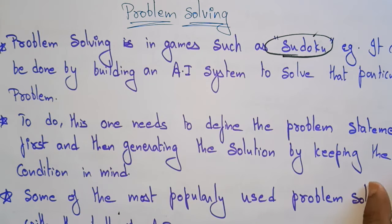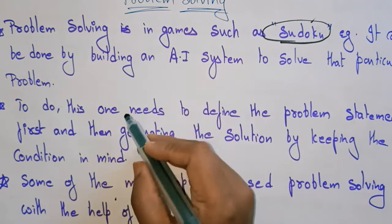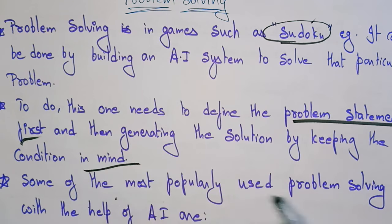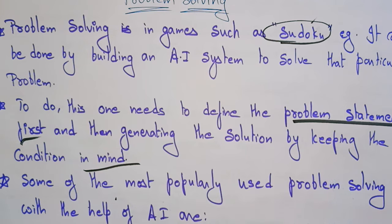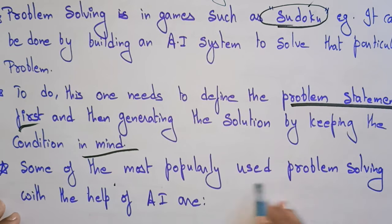Sudoku is a static environment. To solve it using AI, you first need to define the problem statement, and then generate a solution by keeping the conditions in mind. Whenever a problem arises, you follow specific steps: first, identify what the problem statement is, then think about solutions under different conditions and techniques.